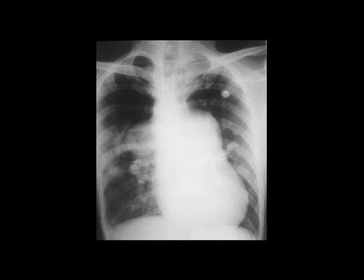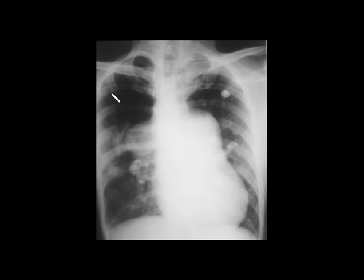Coming to the next case, you can see classical dilatation of the main pulmonary artery, right branch of the pulmonary artery, right ventricular hypertrophy, and pulmonary oligemia. This is a case of pulmonary arterial hypertension. Remember: dilated pulmonary artery, pulmonary oligemia with hypertrophy of the right ventricle, and upturned apex.